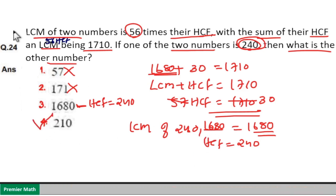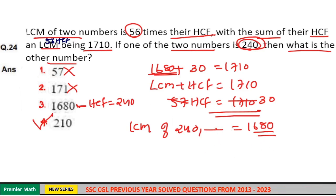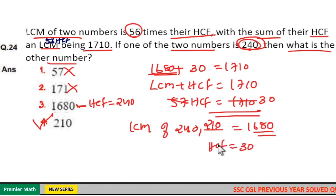So your answer is option 4. LCM of 240 and 210 is 1680, and their HCF is equal to 30. So option 4 is your answer.